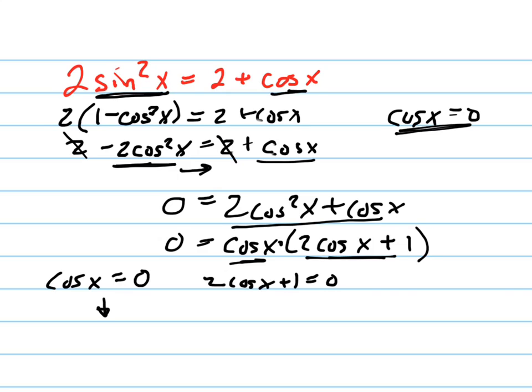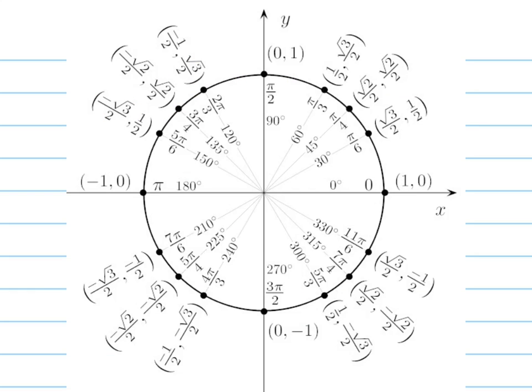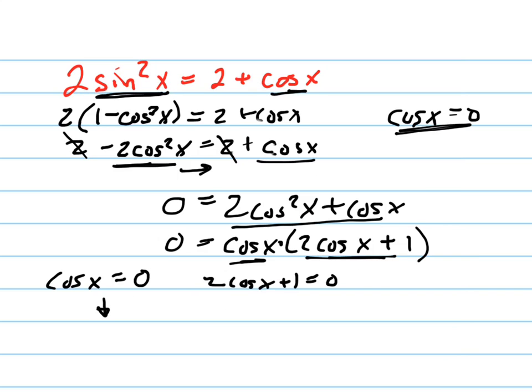This means, if I look at my unit circle, the cosine is equal to 0 at π over 2 and 3π over 2. So x equals π over 2, and 3π over 2 for that one.